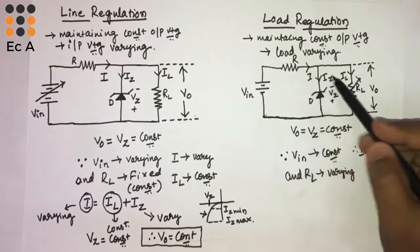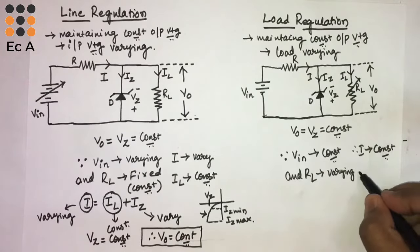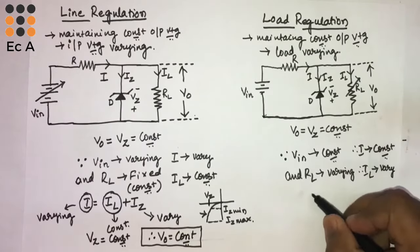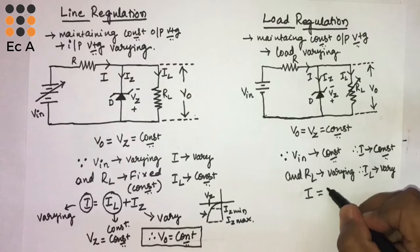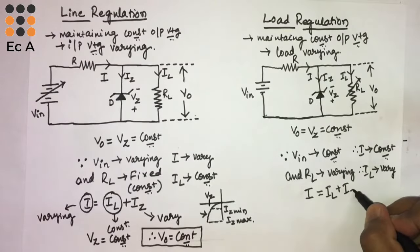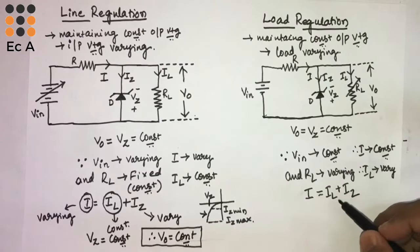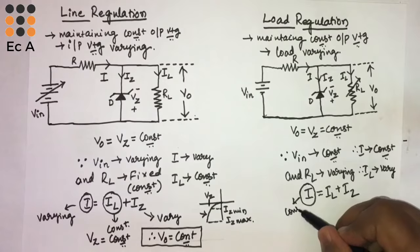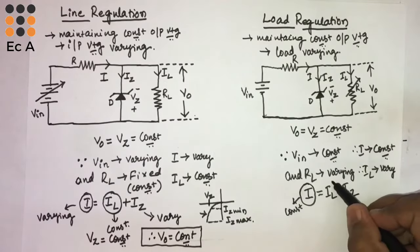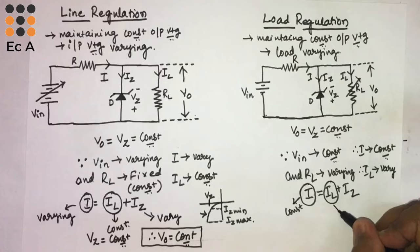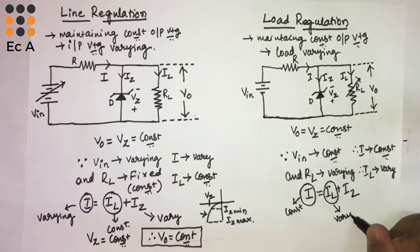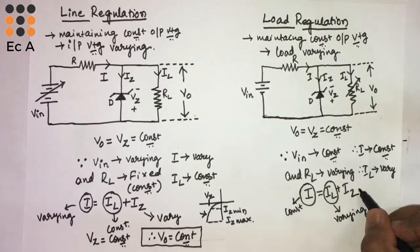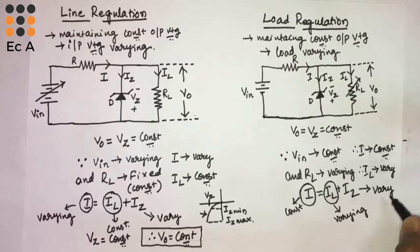R-L is varying, therefore I-L will vary. We know the equation I is equal to I-L plus I-Z. From this, since I is constant and I-L is varying, I-Z should vary to maintain I as constant.